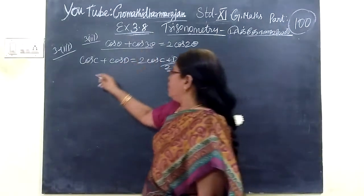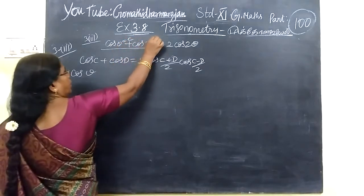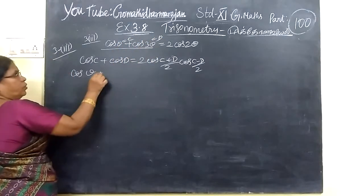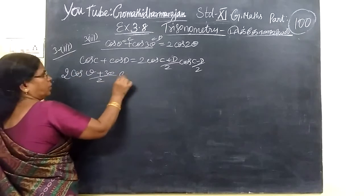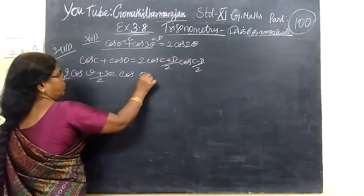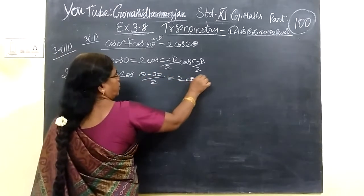So in this way you are writing this. Here cos 3θ, this is C and this one is D, so (θ plus 3θ)/2. Follow here, then (cos 3θ minus θ)/2 equals 2 cos 2θ.